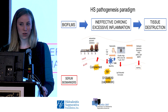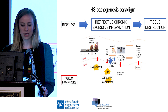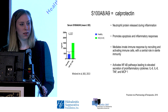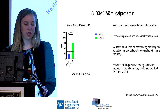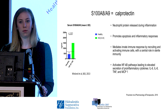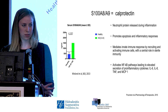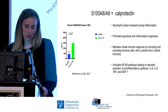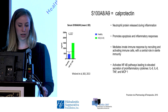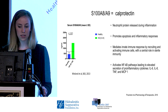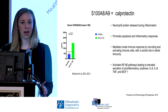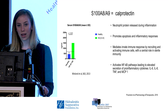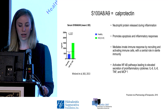We'll start with S100A8/A9, or calprotectin. In the following slides, we've replotted some data pulled from the literature to highlight key points. In a study by Wayland et al., calprotectin was significantly elevated compared to healthy controls, and they determined that at a level of 680 nanograms per milliliter, this was both sensitive and specific for diagnosing HS.